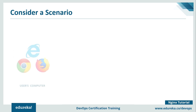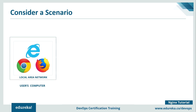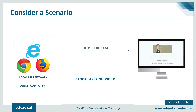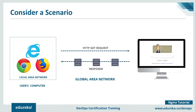What happens is a request is initiated by your browser, leaving your local area network, and then that request traverses through the global area network. It reaches one of the computers which is assigned to serve your Google homepage. That computer then initiates a response containing all the contents of the page, and the response takes a similar route back through the global area network to your local area network and finally to your browser.